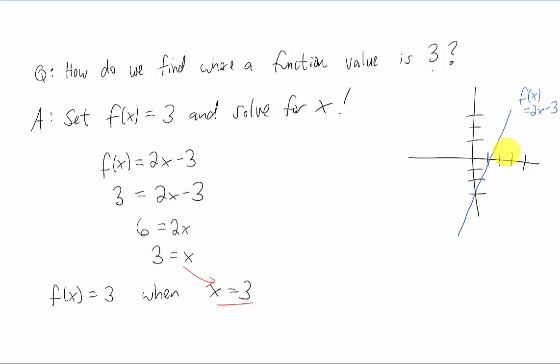So what we say is the function value is 3 whenever our x value is 3. And what this indicates is there's a point on this graph, 3, 3. Whenever the x value is 3, our function value is also 3.